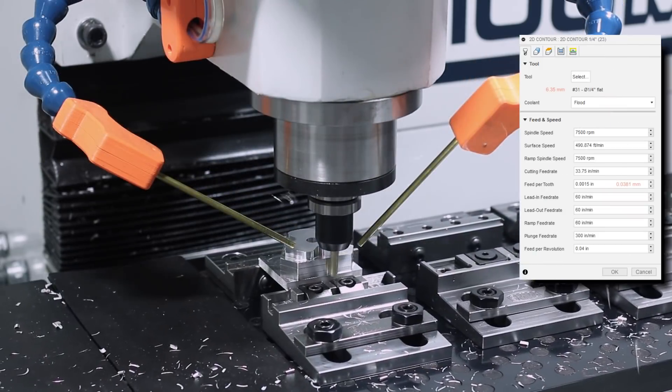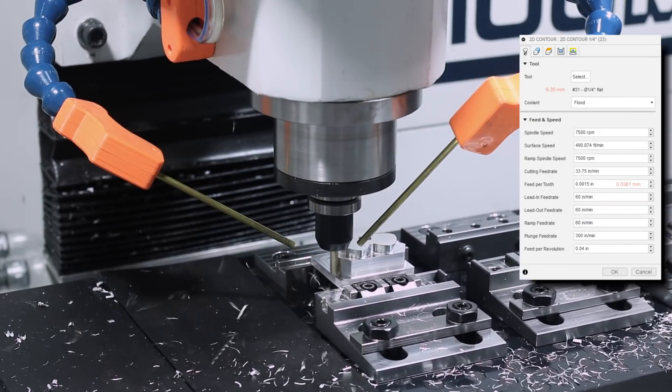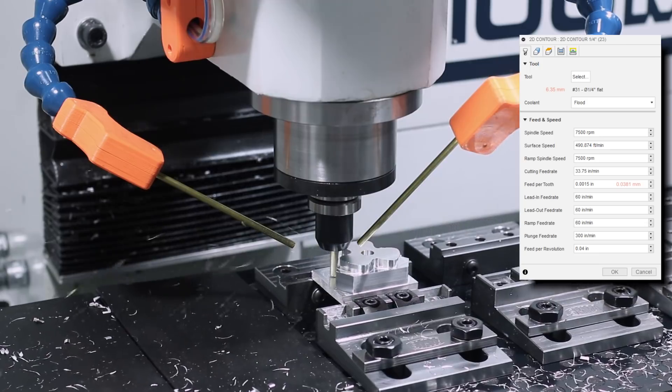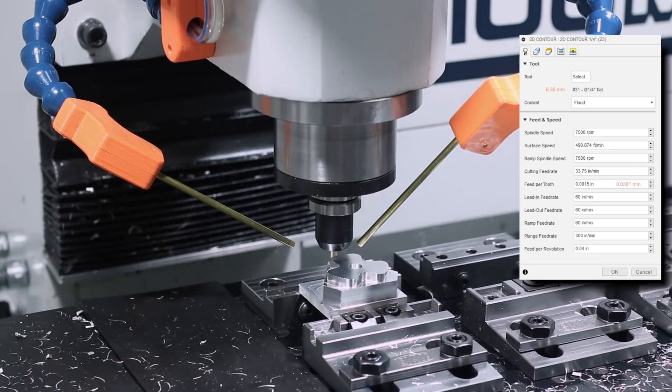Now we'll finish off the contours with a 2D contour, same tool, still at 7500 RPM, only this time we'll slow it down to 1.5 thou feet per tooth for a better surface finish.